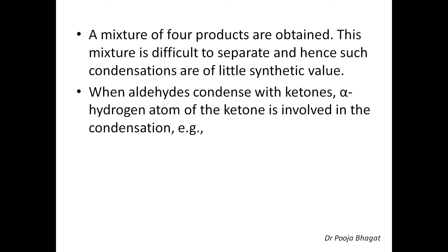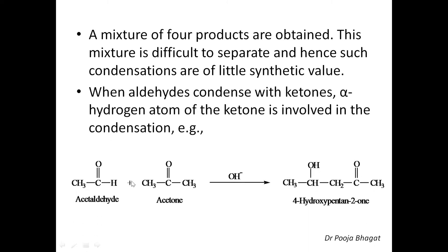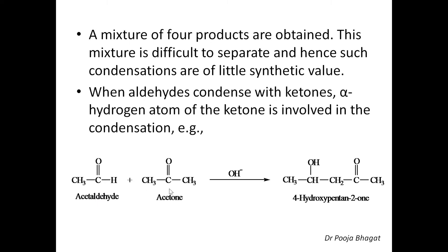Now when one molecule is an aldehyde and another molecule is a ketone, how does condensation take place? When aldehydes condense with ketones, the alpha hydrogen atom of the ketone is involved in the condensation. For example, here we have taken acetaldehyde and acetone. In this case, it is the acetone which will form the enolate ion, as the alpha hydrogen atom of the ketone is involved. The carbonyl carbon of the aldehyde is a stronger electrophile than the ketone.